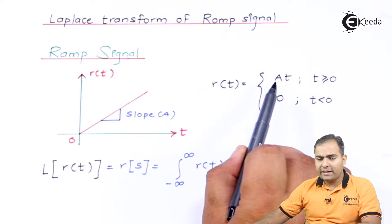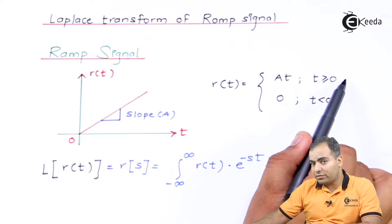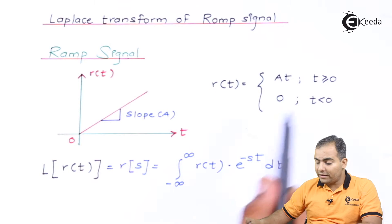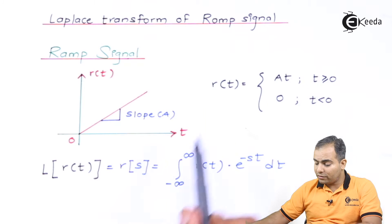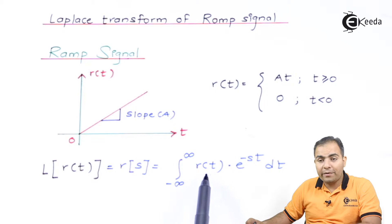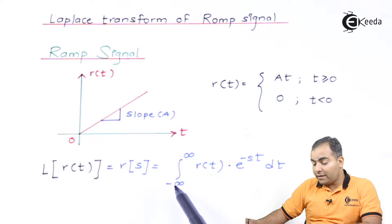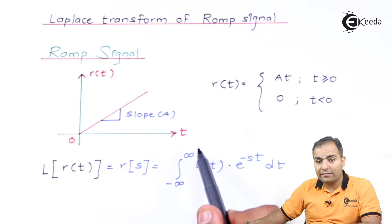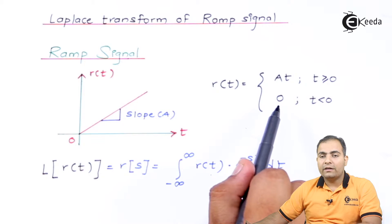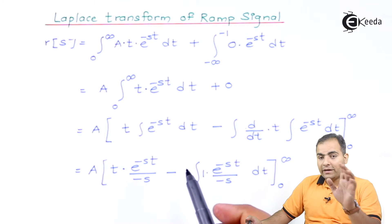We substitute the values of the ramp wave, which is a·t. Since a·t is available only when t is greater than or equal to zero, the limits change: when we substitute a·t, the integration runs from zero to infinity. For t less than zero — from minus infinity to zero — the ramp wave has amplitude zero, so that portion of the integration is zero.